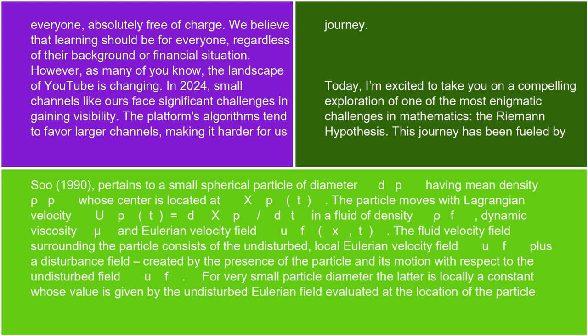The particle moves with Lagrangian velocity up(t) = dxp/dt in a fluid of density ρf, dynamic viscosity μ, and Eulerian velocity field uf(x,t). The fluid velocity field surrounding the particle consists of the undisturbed local Eulerian velocity field uf plus a disturbance field created by the presence of the particle and its motion with respect to the undisturbed field uf.